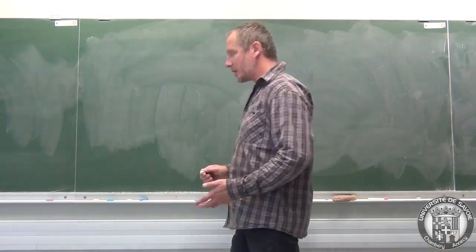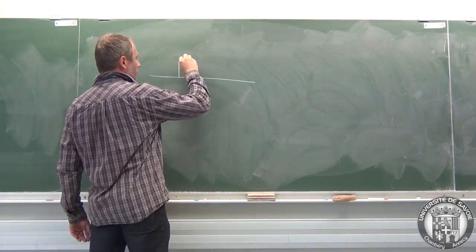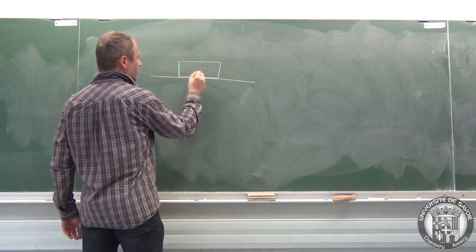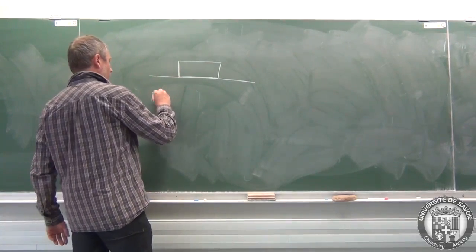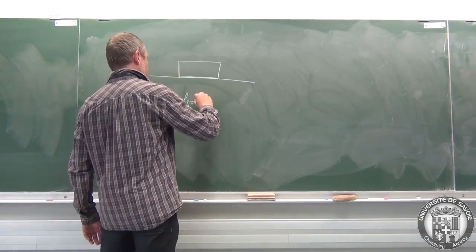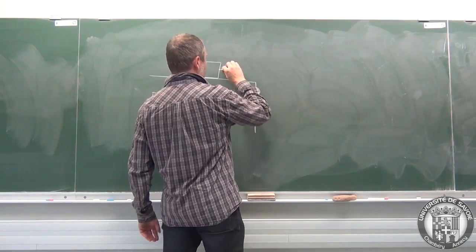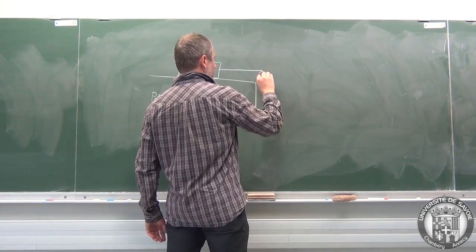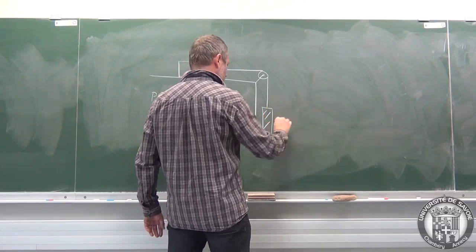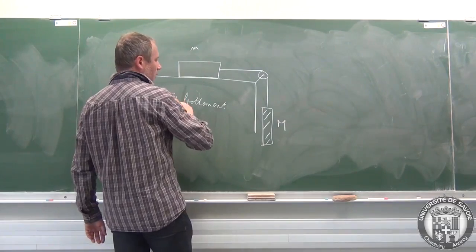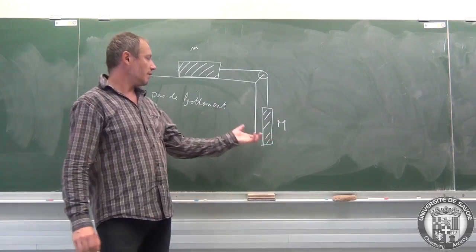L'exercice, c'est le suivant: sur un plan horizontal, on a ici un objet qui peut se déplacer le long de ce plan. Il est libre de glisser sur le plan, il n'y a pas de frottement. Ce corps a une masse M et on l'attache à une poulie au bout de laquelle on suspend une masse m.